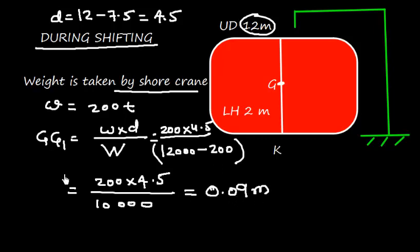That is the shift in center of gravity. Since the shore crane has taken the load, the center of gravity is shifted downward. GG1 is shifted downward because from the top the weight is taken. The bottom is heavy now, so GG1 is to be downward.